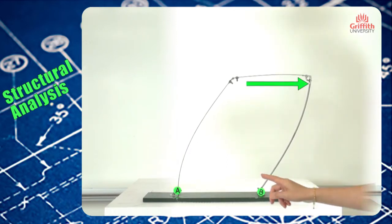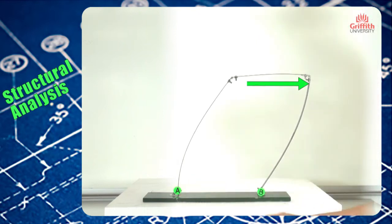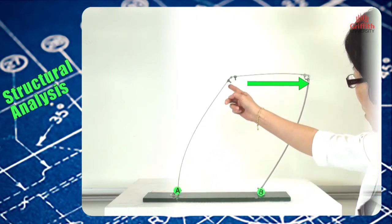For point A, which is a fully fixed support, this column deforms into a single curvature, pretty much like a cantilever column—single curvature without a control flexor point.